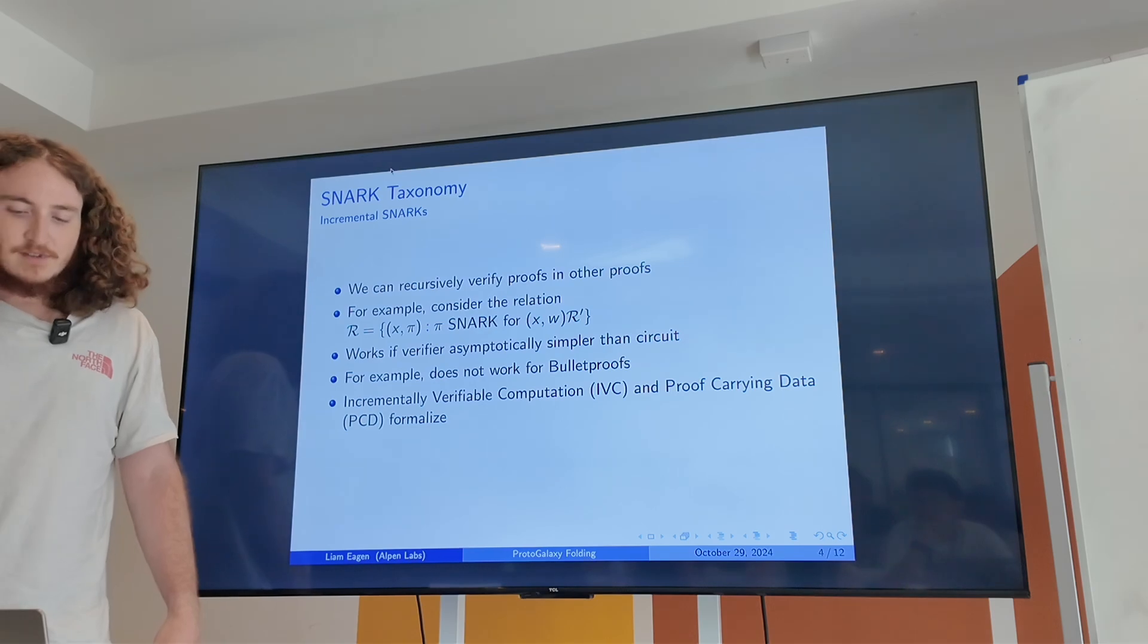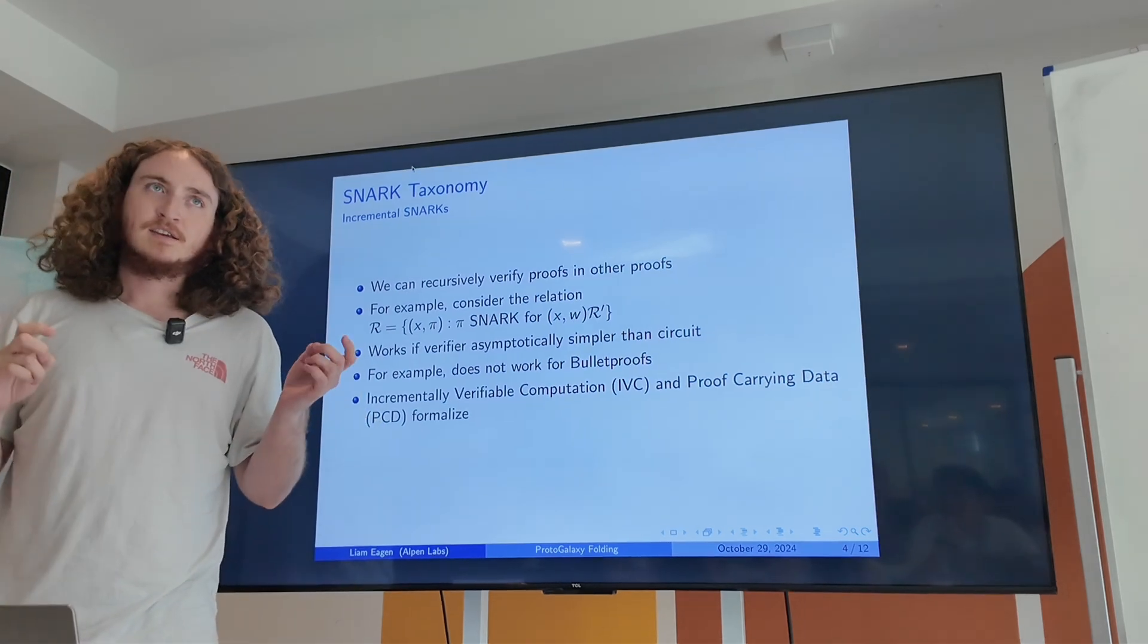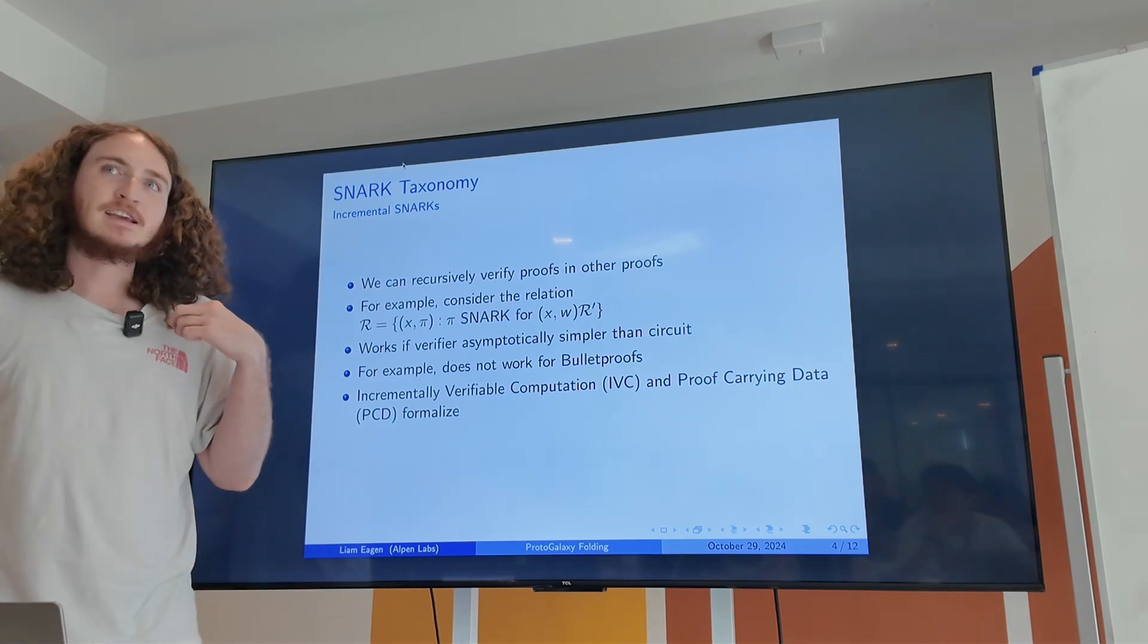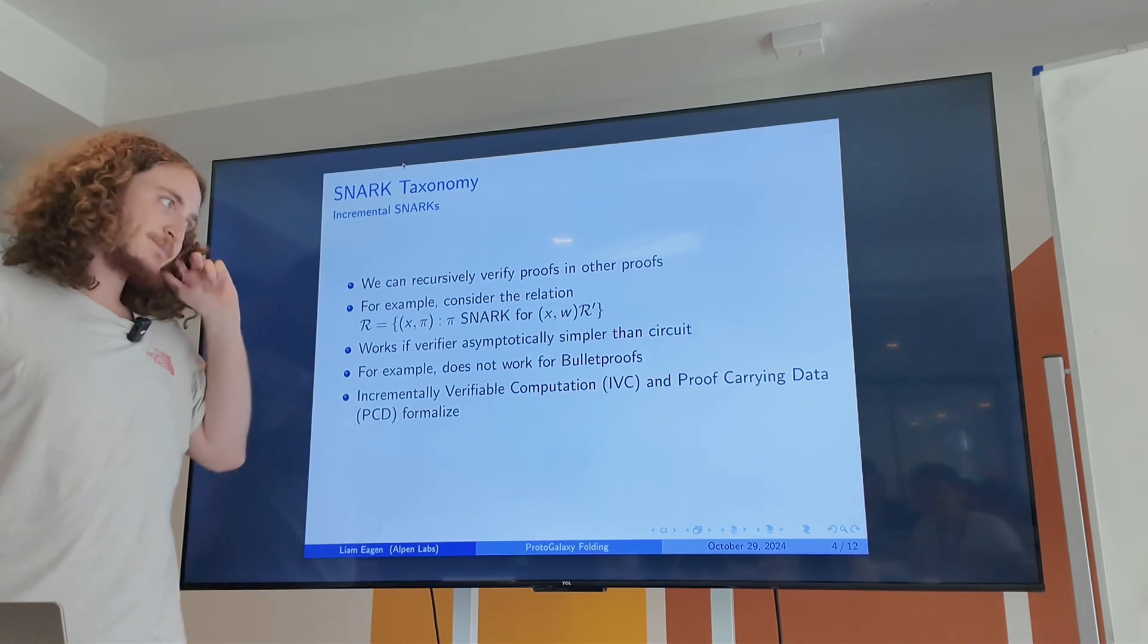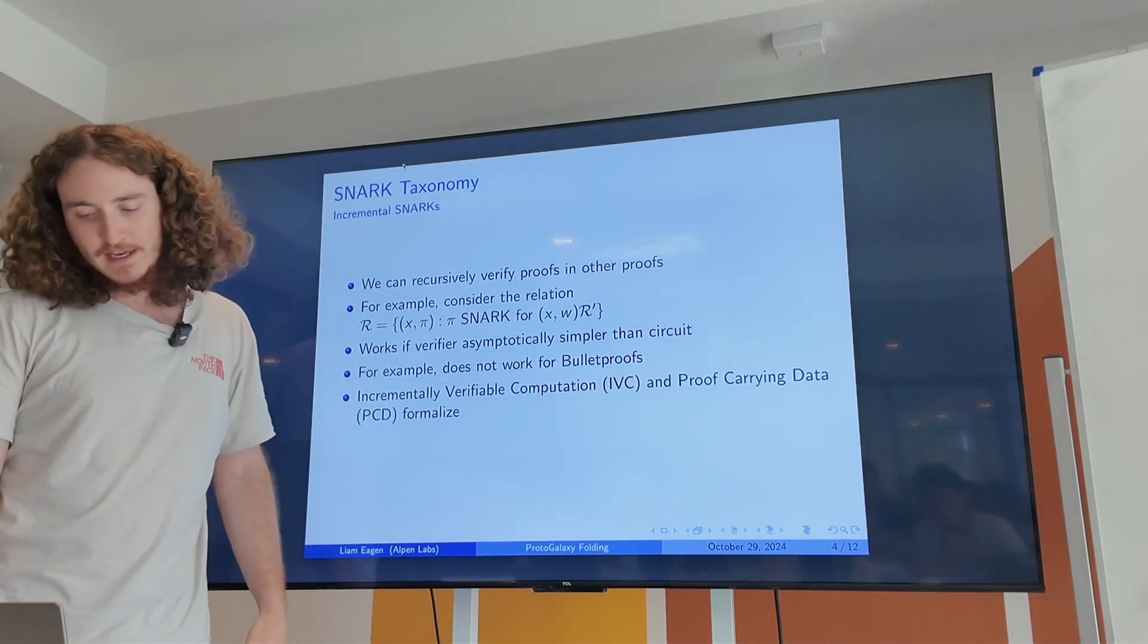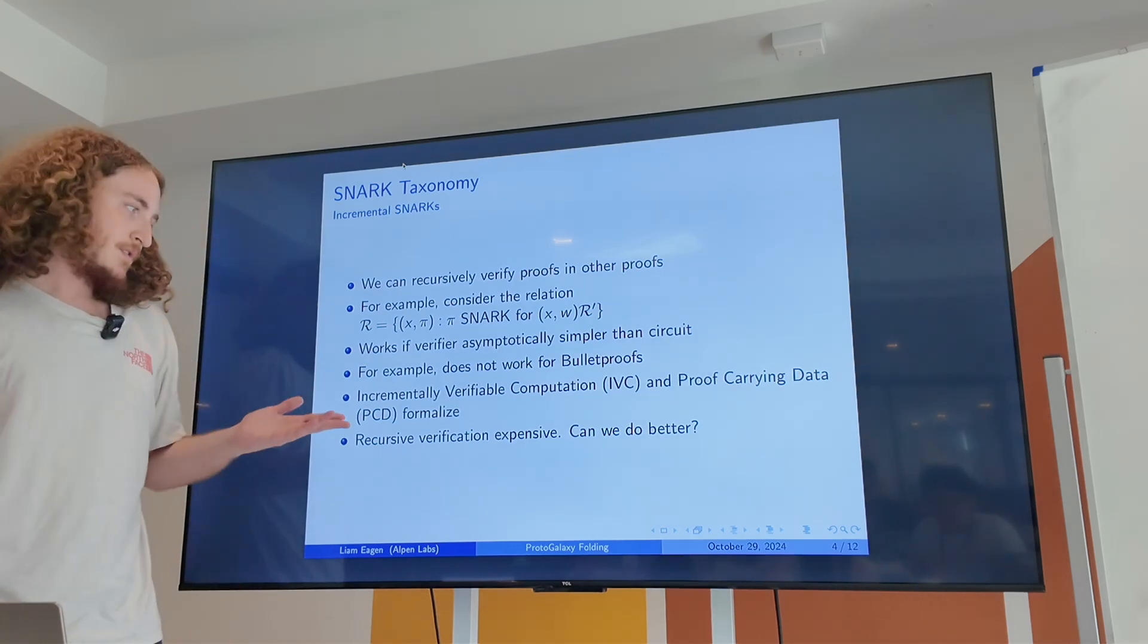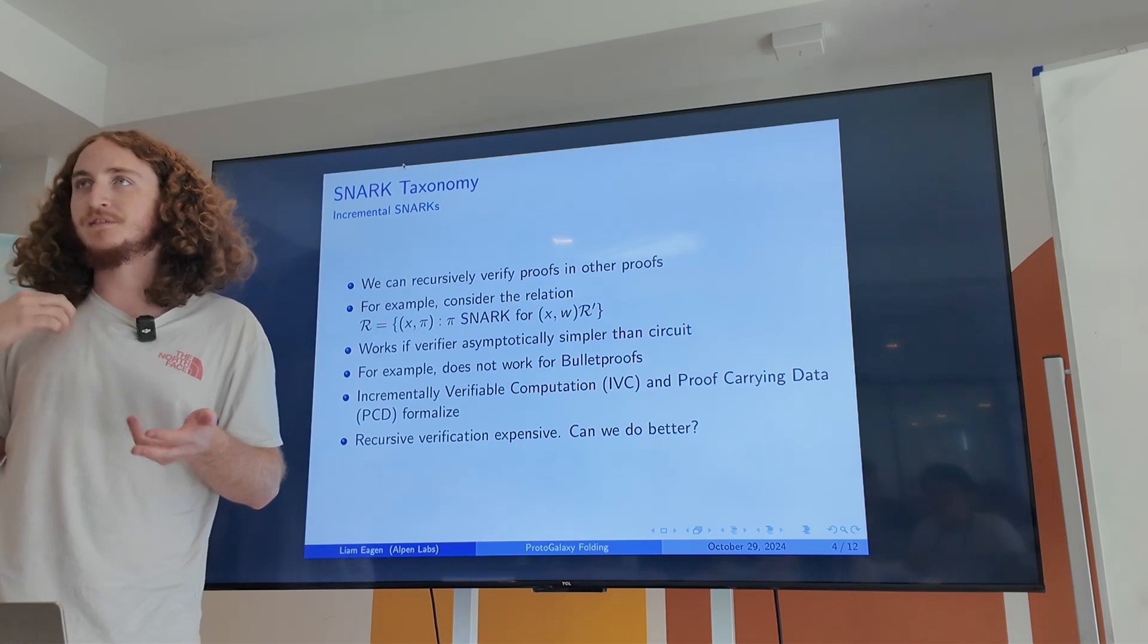So the insight of incremental SNARKs, which includes things like IVC, incrementally verifiable computation, and proof carrying data, is that we can recursively verify proofs in other proofs. You can prove that you know a proof for some other relation. And this lets you compress proofs arbitrarily.